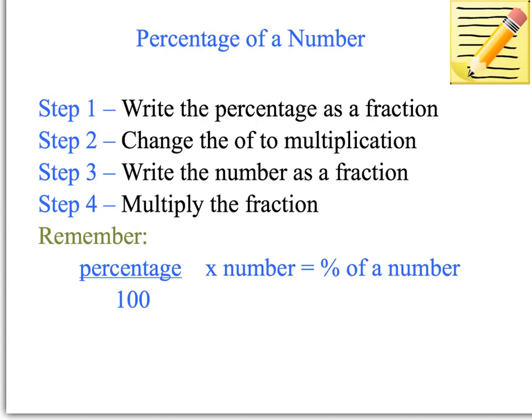Okay, now when we're looking at percentage of a number there are 4 steps that you need to write down and remember. We write the percentage as a fraction first of all. So if we're looking at the previous example, 30% of $80 we would write 30 over 100. Then the second step is to change the of to multiplication.